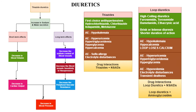Loop diuretics are called high-ceiling diuretics: furosemide, torsemide, bumetanide, and ethacrynic acid. They cause brisk, intense diuresis but have a shorter duration of action. Adverse effects are similar to thiazides, but they cause hypocalcemia. They may also cause hypovolemia and transient deafness because loop diuretics distribute in the vestibular system. NSAIDs reduce the efficacy of loop diuretics, and aminoglycosides combined with loop diuretics increase the risk of transient deafness.